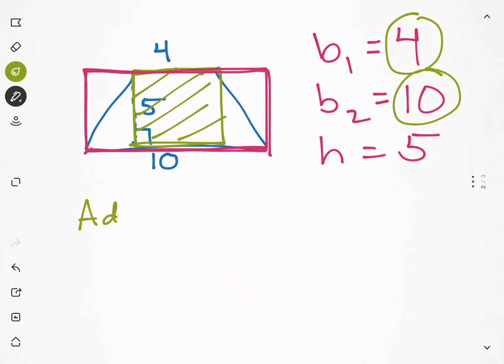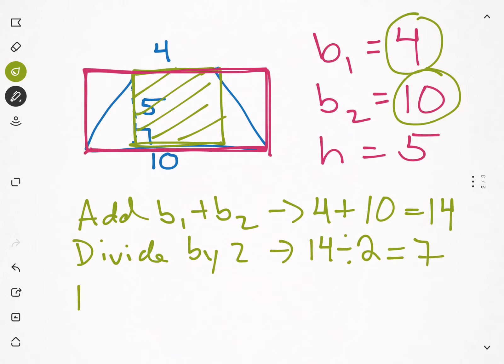So what we're going to do is we're going to add base one plus base two, which would be fourteen. Four plus ten is fourteen. And then we're going to divide by two. That gives us the average, the Goldilocks. Yes. So fourteen divided by two is seven. And then we're going to multiply that by the height. Multiply by the height. So we're going to do seven times five, which is thirty-five. Thirty-five. So our answer is that the area is equal to thirty-five units squared.